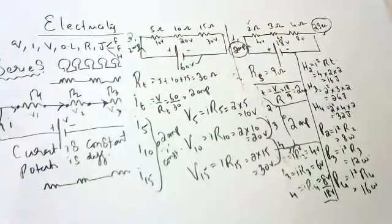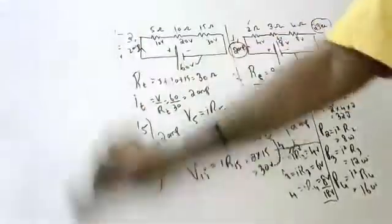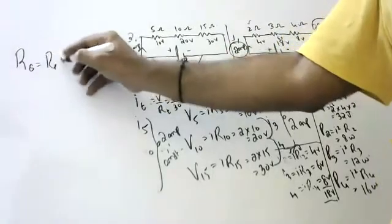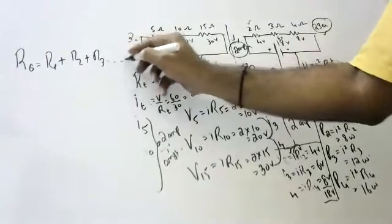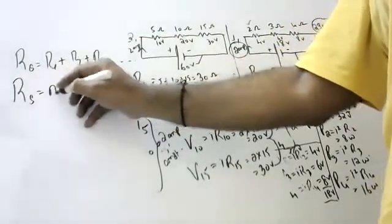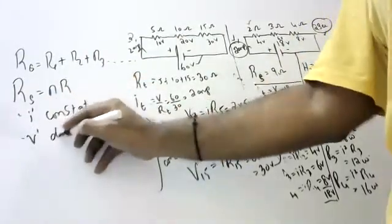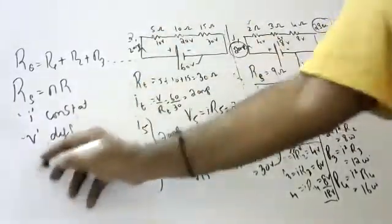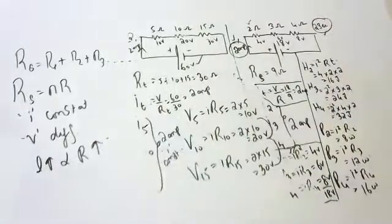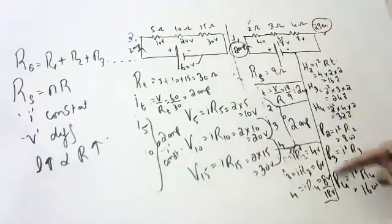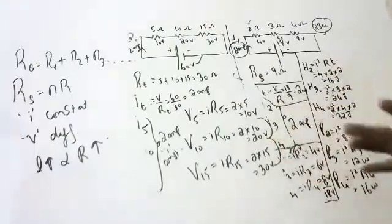This is series connection. In series connection, R_eff = R1 + R2 + R3 and so on. If all of them are the same value, R_eff = nR. Current is constant; potential is different. Because overall length is increasing, resistance increases — as resistance is directly proportional to length. You can find heat and power for each component. Everything you can find out.